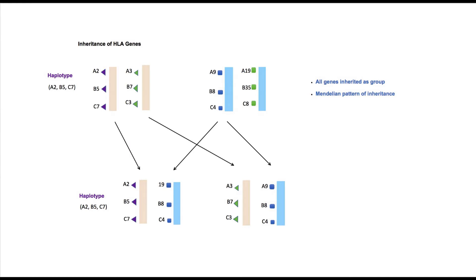These genes are located in close approximation on the chromosome, so all genes are inherited as a group. This group is called a haplotype. For example, A2, B5, and C7 alleles form a haplotype, and all these genes are inherited as a group.